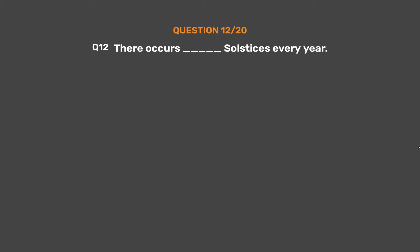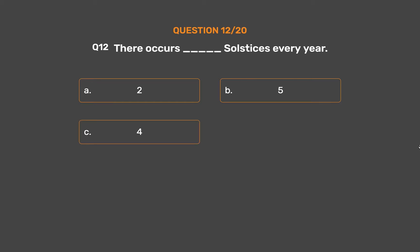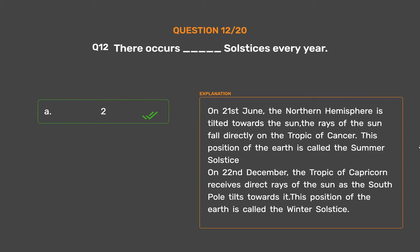Question number 12. There occur underscore solstices every year. Option A: 2. Option B: 5. Option C: 4. Option D: 3. The correct answer is Option A: 2. On 21st June, the Northern Hemisphere is tilted towards the Sun, and the rays fall directly on the Tropic of Cancer — this is the Summer Solstice. On 22nd December, the Tropic of Capricorn receives direct rays as the South Pole tilts towards the Sun — this is the Winter Solstice.